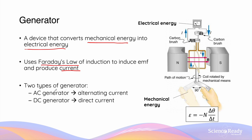In this video, we'll discuss two types of generators: an AC generator, which produces alternating current, and a DC generator, which produces direct current.